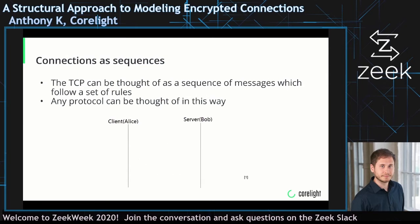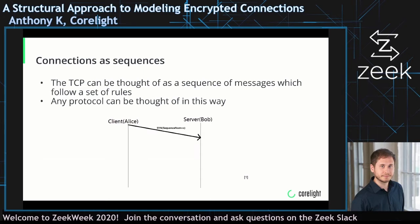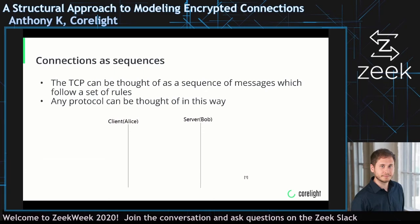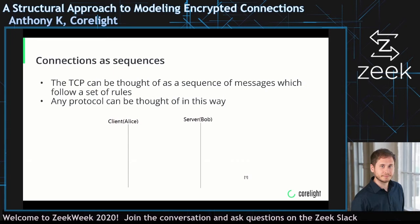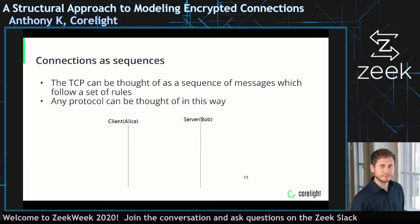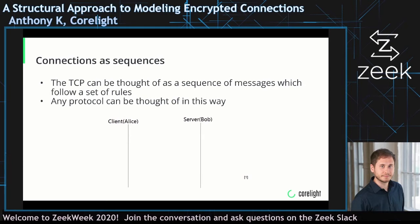TCP has a three-way handshake that consists of a SYN, a SYN-ACK, and an ACK. To represent a TCP connection as a sequence, you can think of these three events as being required for TCP to function. If these happen out of order or don't happen at all, TCP doesn't operate properly. Any protocol can be thought of in this way, where you have a sequence of things that happen, the connection is used, and then potentially another sequence of things that happens to tear down the connection.